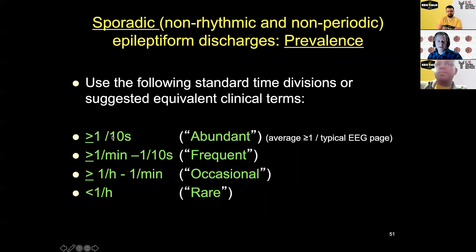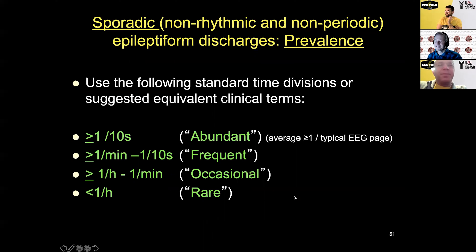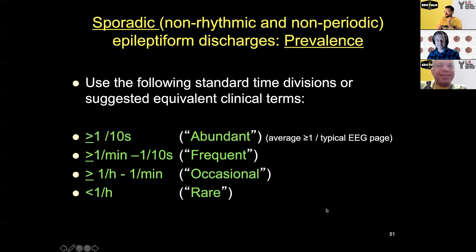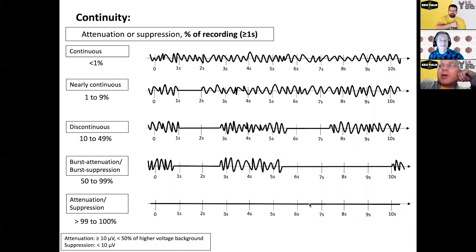For interictal discharge frequency: occasional means between once a minute and once an hour; frequent means more than once a minute; abundant is every page; and rare is less than once an hour. If you have a one-hour EEG with only one discharge, that already makes it occasional.